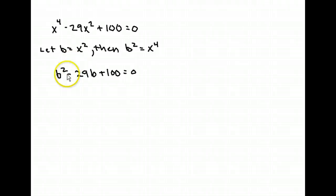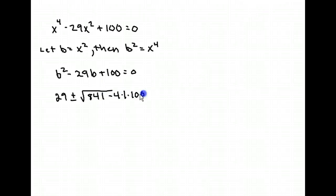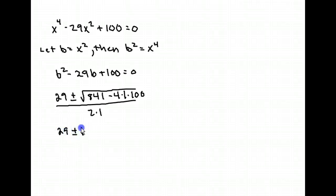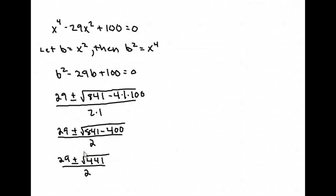You know how to solve a quadratic raised to the second power. So using the quadratic formula, you have positive 29 plus or minus the square root of 29 squared, which comes out to 841, minus 4 times a times c, all divided by 2 times a. That's 29 plus or minus the square root of 841 minus 400 divided by 2, which is 29 plus or minus the square root of 441 divided by 2. From your calculator, the square root of 441 is 21.